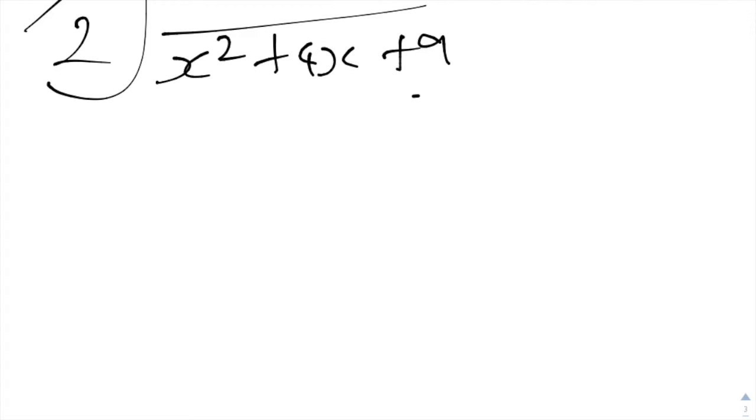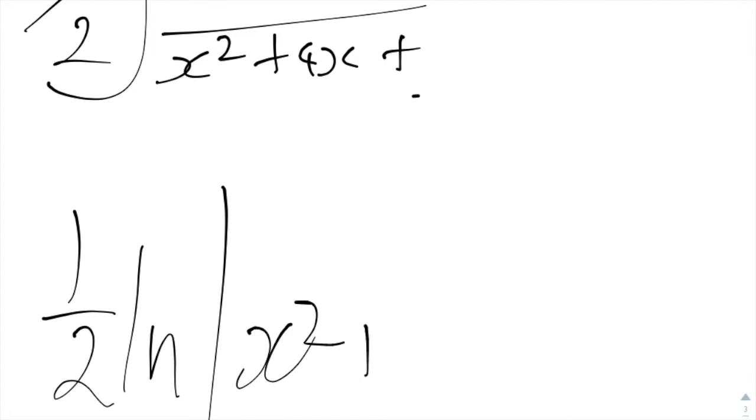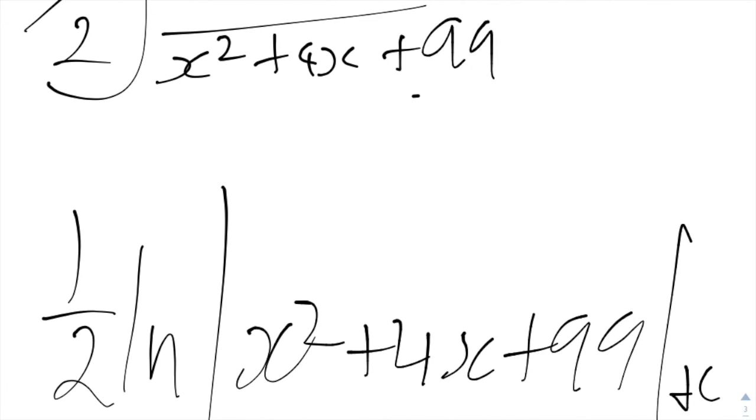Now therefore, we can use our rule of it being a half ln of x squared plus 4x plus 99 plus c. And there we have it.